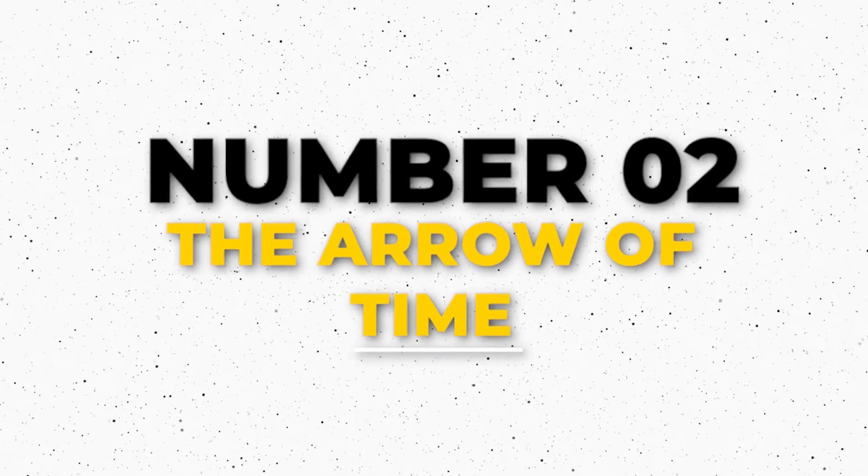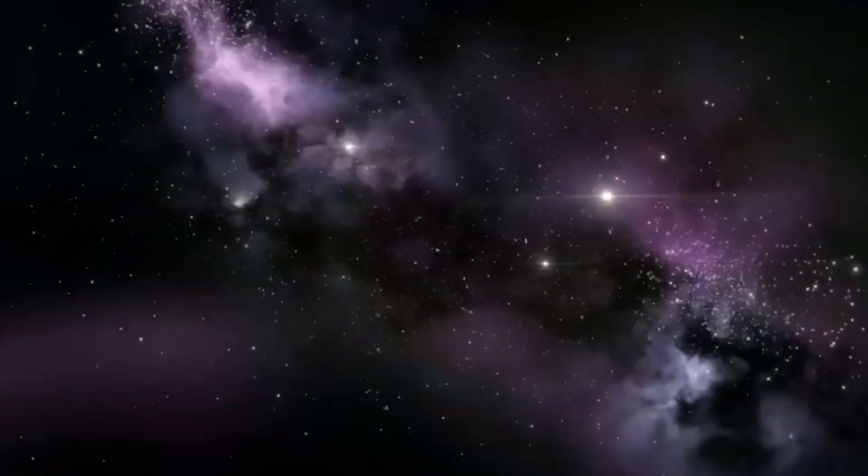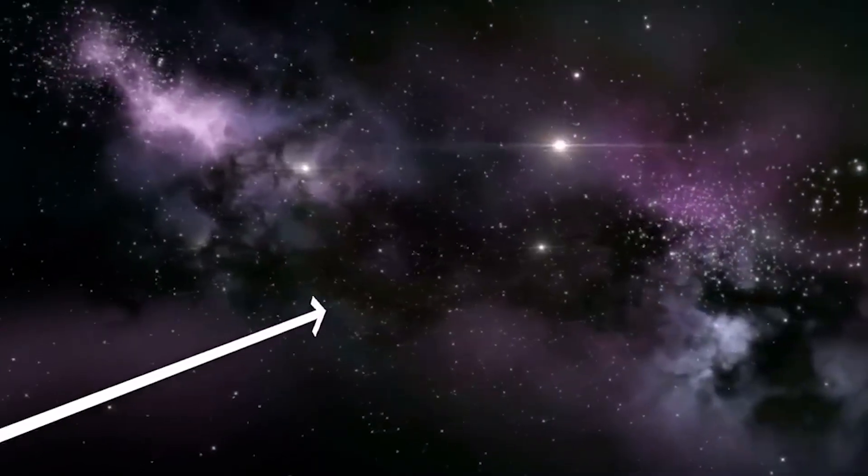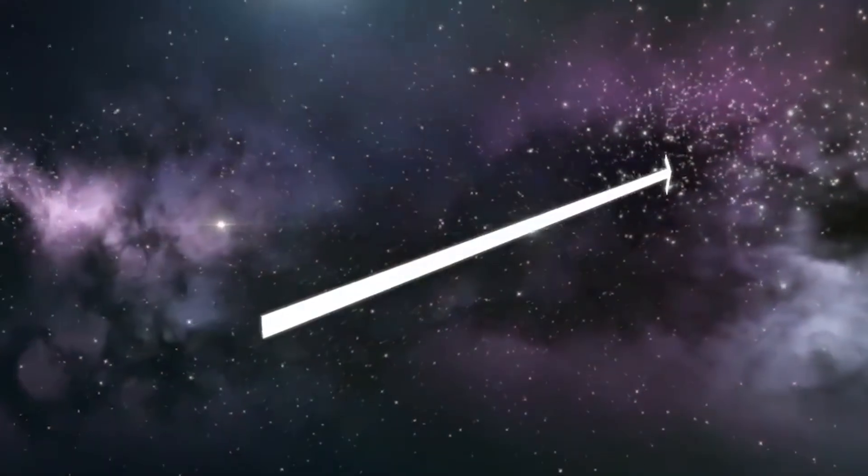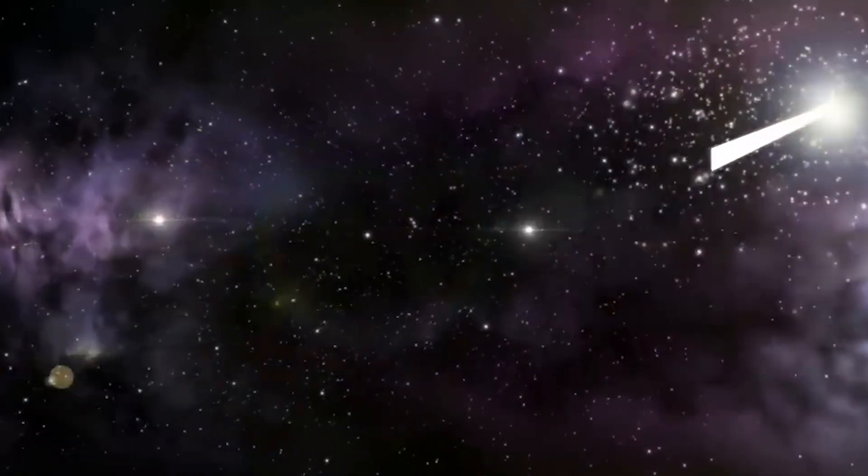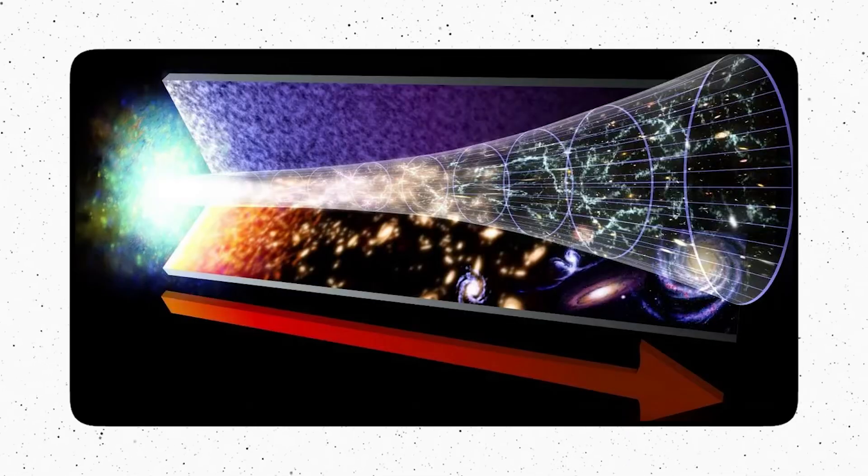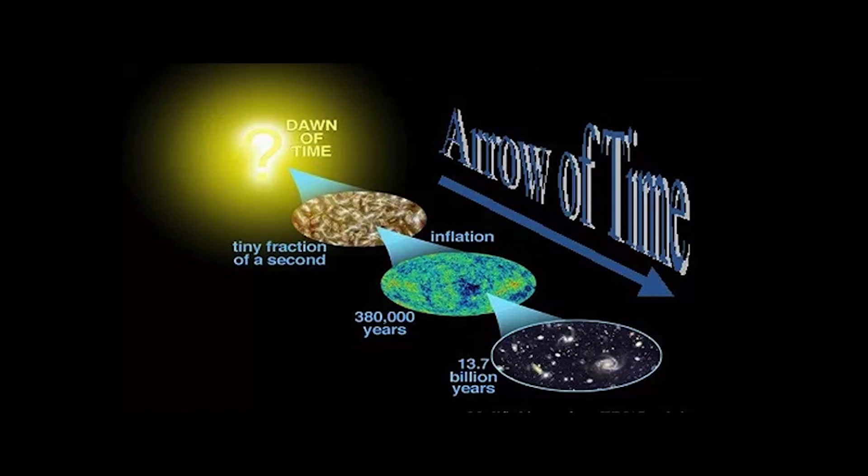Number 2: The Arrow of Time. One thing about time that cannot be denied in spite of these explanations is that it appears to travel in a single direction. The second law of thermodynamics, which states that entropy, or disorder, grows with time, is strongly related to this phenomenon, which is called the Arrow of Time.